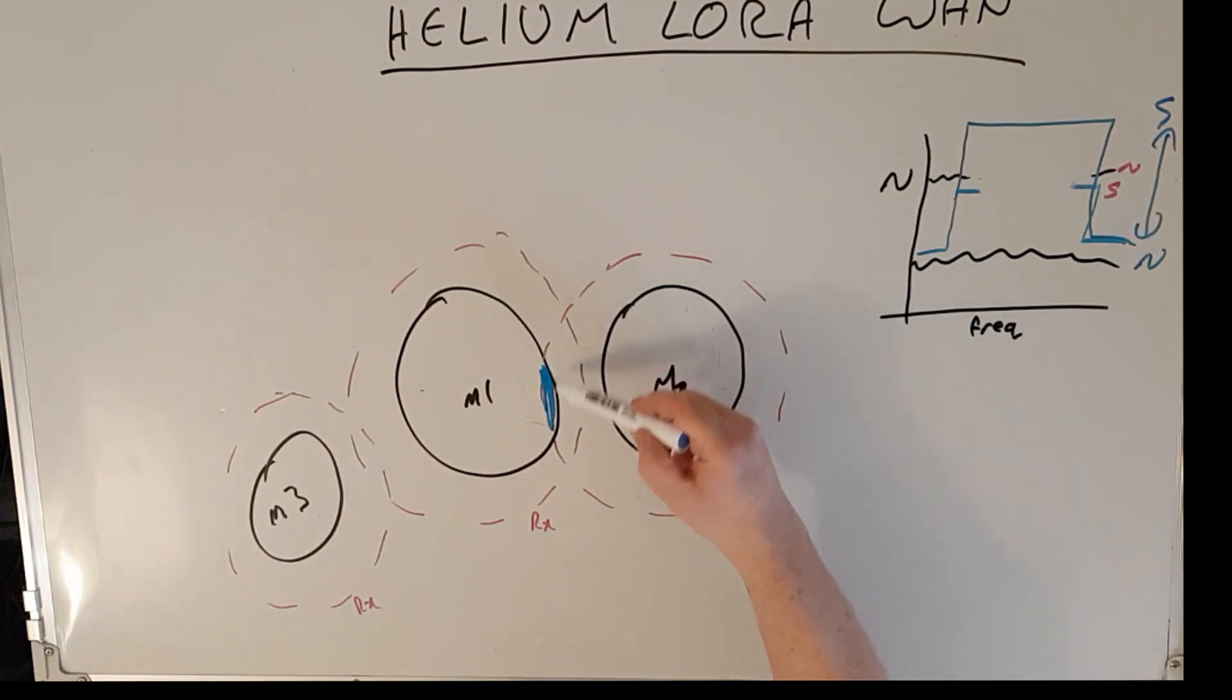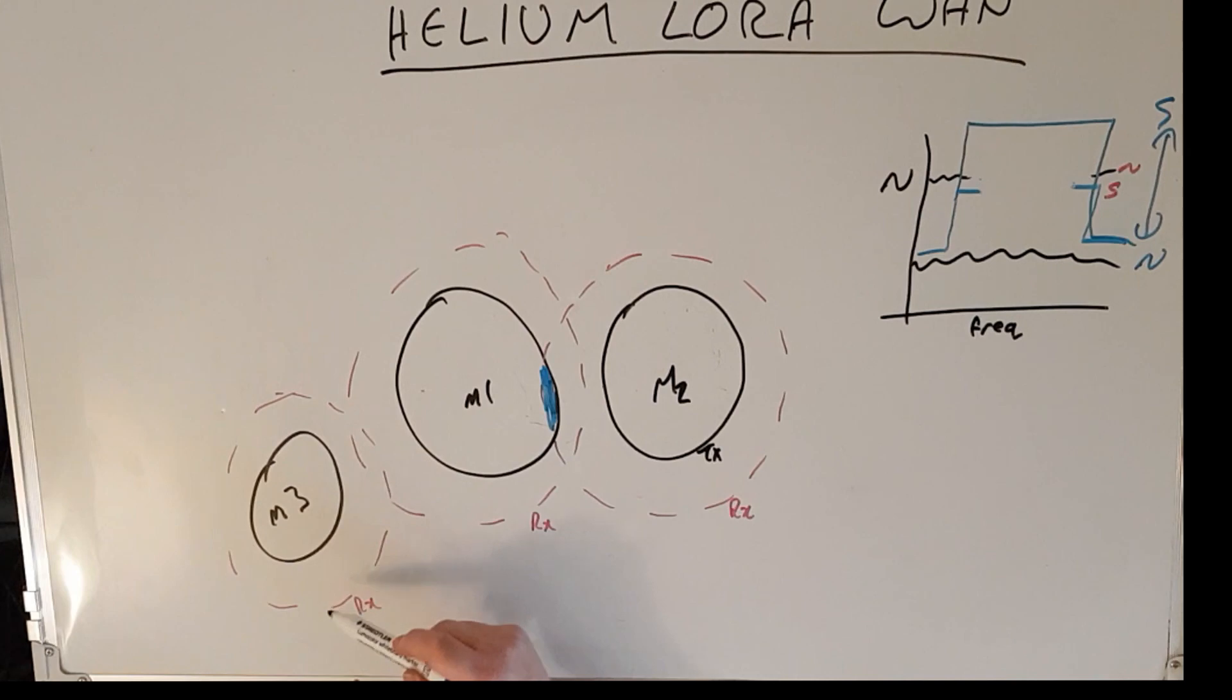If you remember this overlapping coverage here, miner number two's receive coverage overlaps miner number one's transmit coverage, and therefore miner number two is a witness to miner number one's beacon. However, miner number one's receive coverage does not overlap miner number two's transmit beacon coverage and therefore is not a witness. It's also not a witness to miner number three as there's no overlapping coverage at all, transmit or receive.